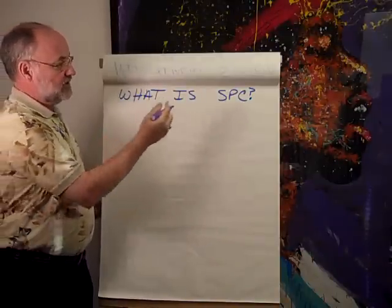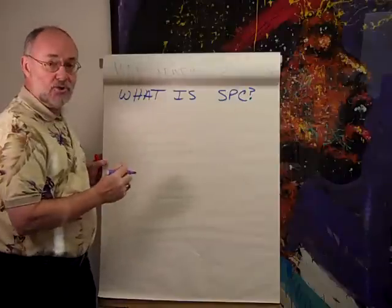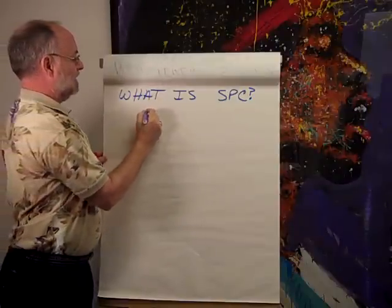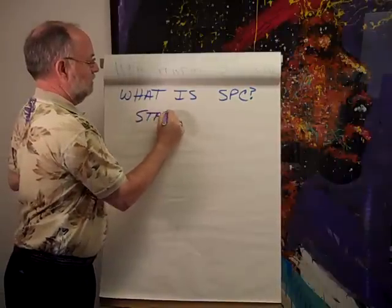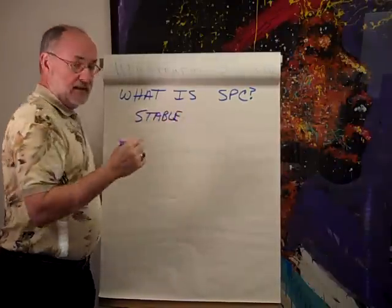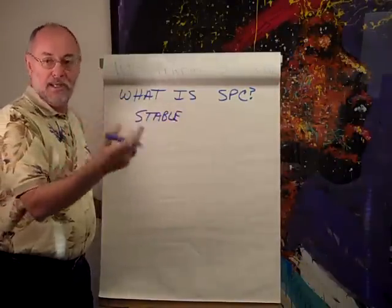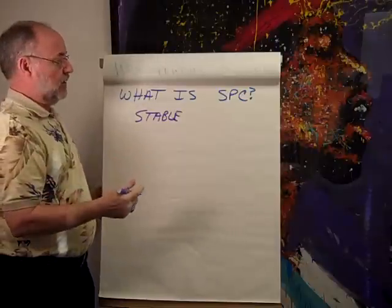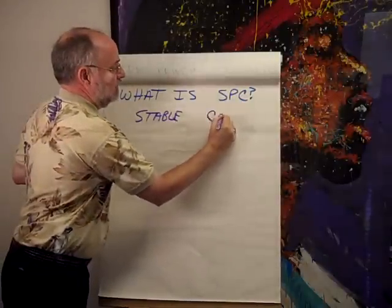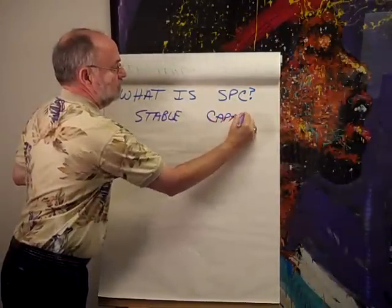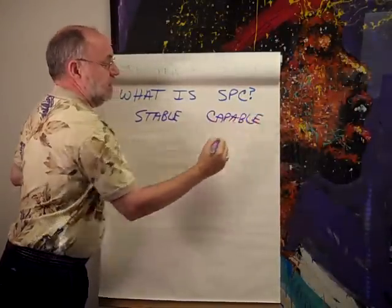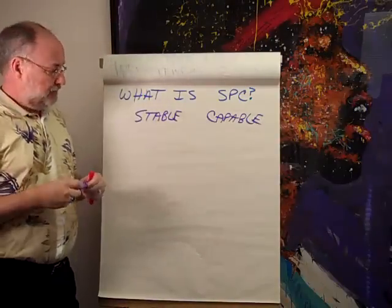What we want to know with statistical process control, or SPC, is: is the process stable? By that I mean, is it consistent? Is it predictable? Can we count on it to deliver what we want? And then is it capable of meeting customer requirements?